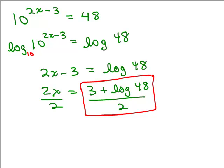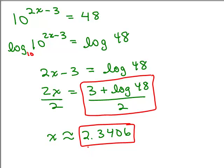Last thing to do would be to use your calculator to estimate it, to 4 decimal places. And estimating, I get 2.3406. You have to be very careful of order of operations. You need to do the log of 48, then add 3, and then divide the whole thing by 2. And I'm going to leave the check to you. You could put 2.3406 back into this original equation and see if you do 10 to the 2x minus 3, it's approximately 48.